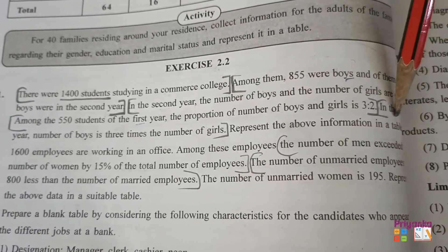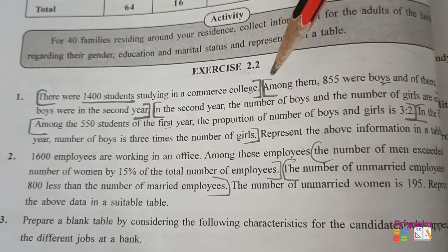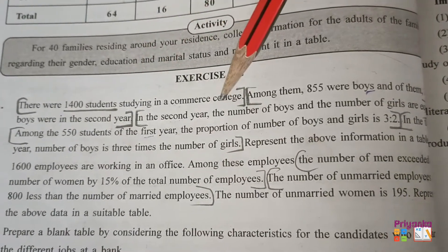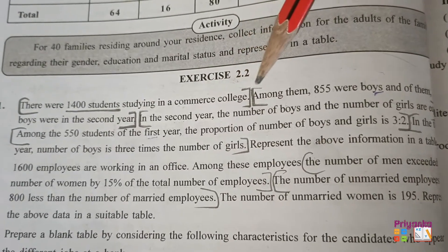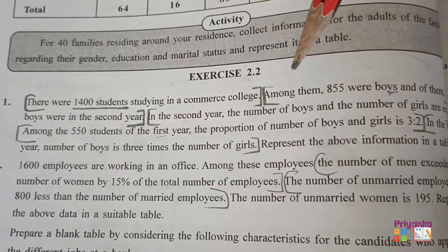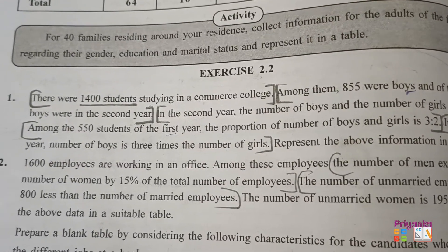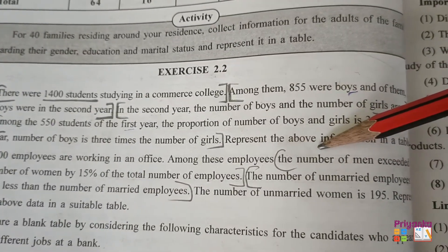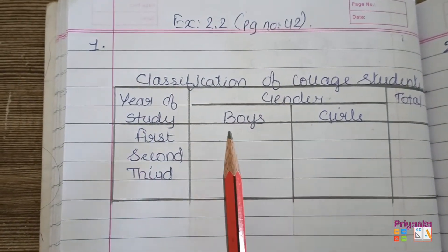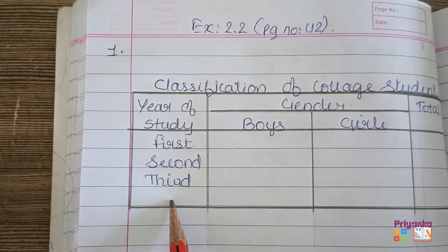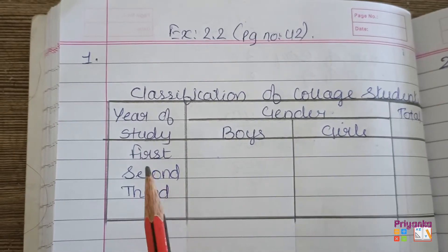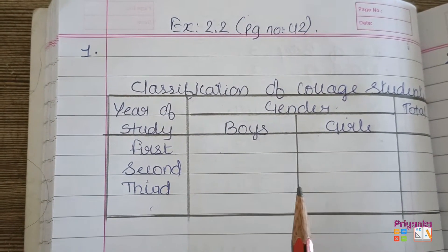Whenever you have to represent information in tabular form, remember to mark the information into brackets. This is just one example to make you understand — go as per the bracket, as the sentence is moving, in the same way you have to complete your tabulation. As we read the question we found it is given about the year of study and the gender — boys and girls — number of students in the Commerce College. Here we can say the attributes are two things: one is the year of study and the other is the gender of the students.